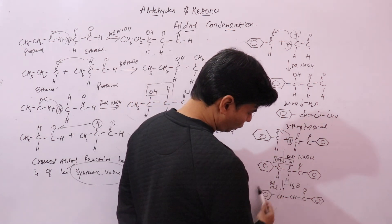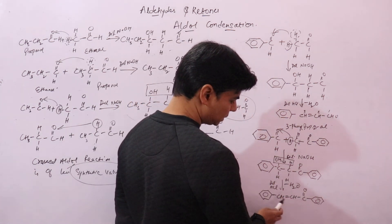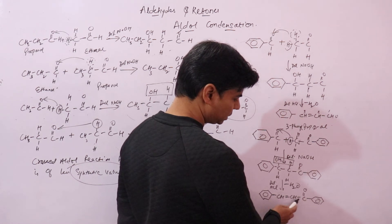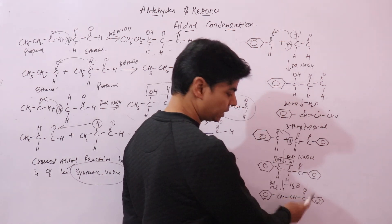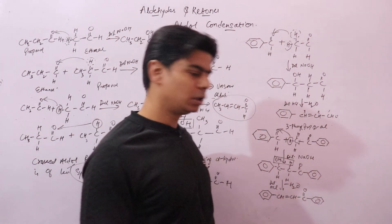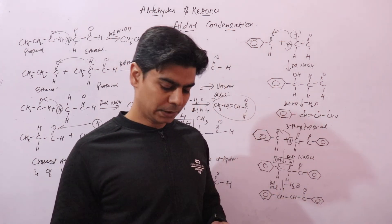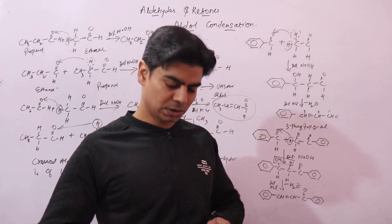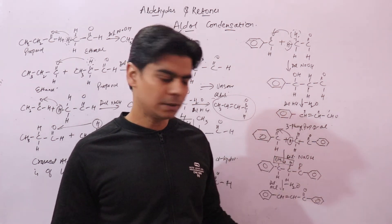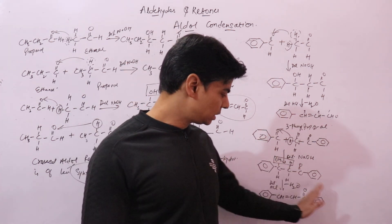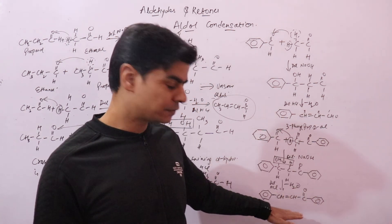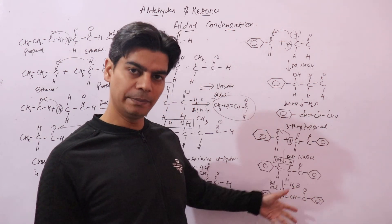The unsaturated ketone is more stable because it is conjugated — you can see the alternating double-single-double-single-double bond system. This conjugated system gives it extra stability.